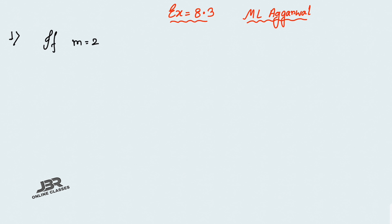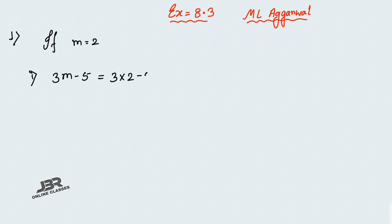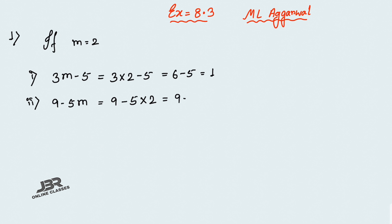Sum number 1: if m equals 2, then find the value. The first one is 3m minus 5. It's a very easy problem. Here m equals 2, so we substitute: 3 into 2 equals 6, minus 5, that equals 1. Number 2: 9 minus 5m. Substitute m equals 2, so 9 minus 10, that equals minus 1.